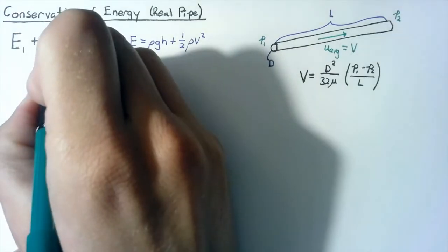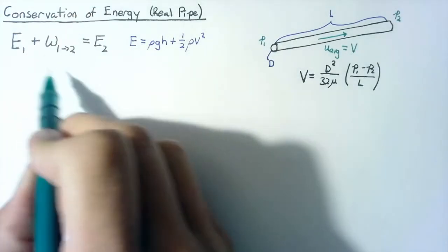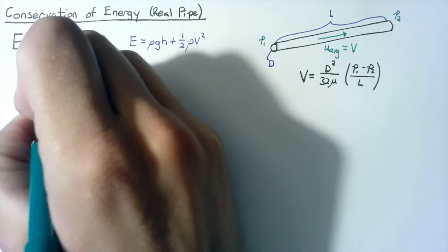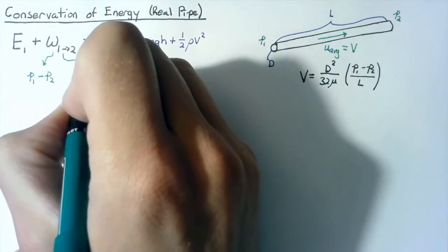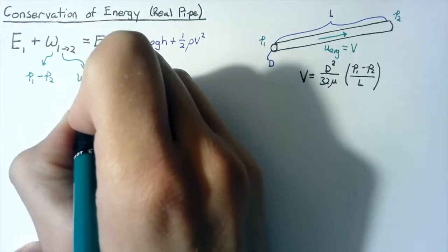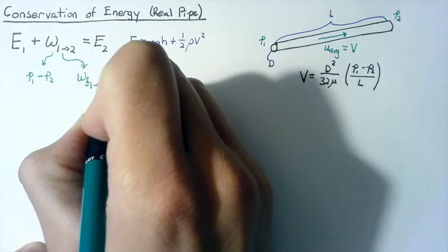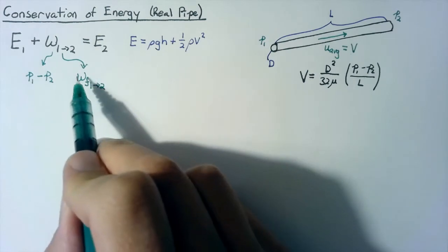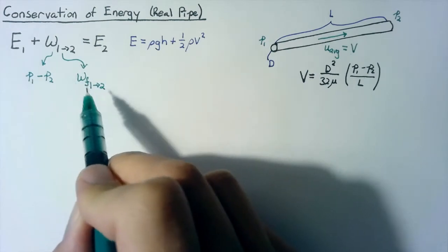This work that we're dealing with, we derived the pressure part of it earlier as just P1 minus P2. It's also going to have a portion which is due to friction. So our goal for this video is to determine what the work done by friction is.